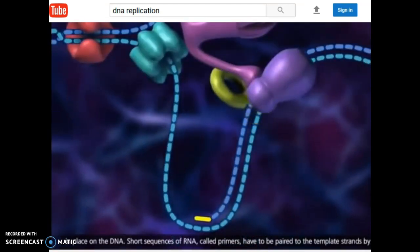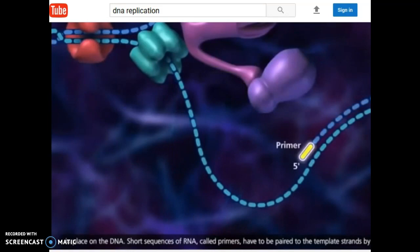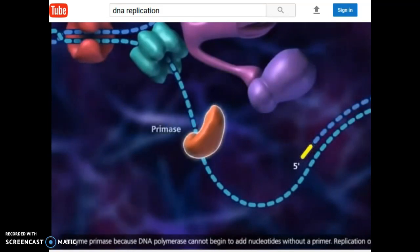Short sequences of RNA called primers have to be paired to the template strands by the enzyme primase because DNA polymerase cannot begin to add nucleotides without a primer.